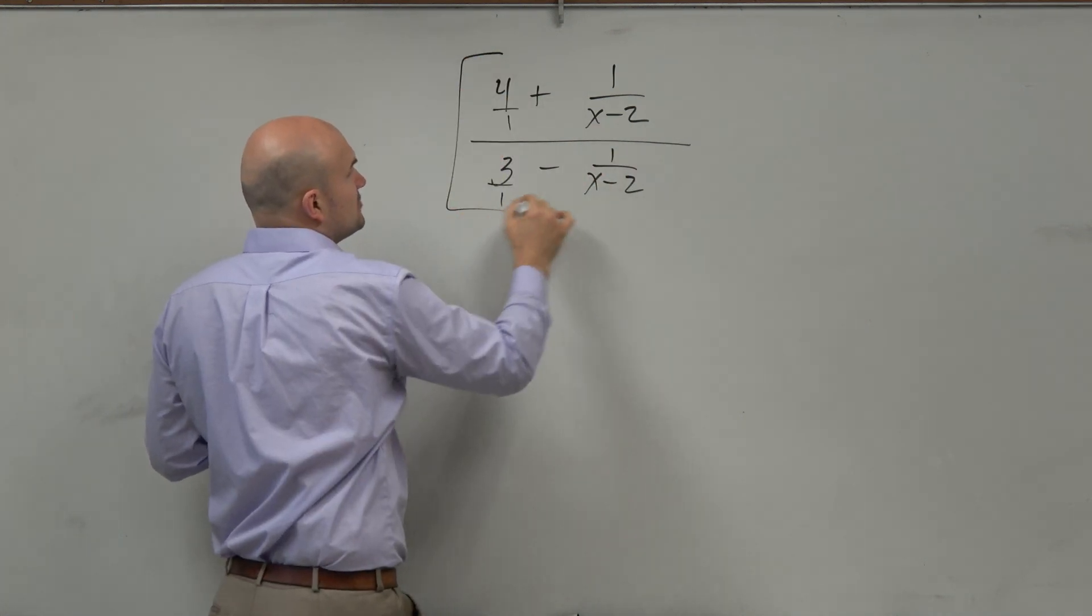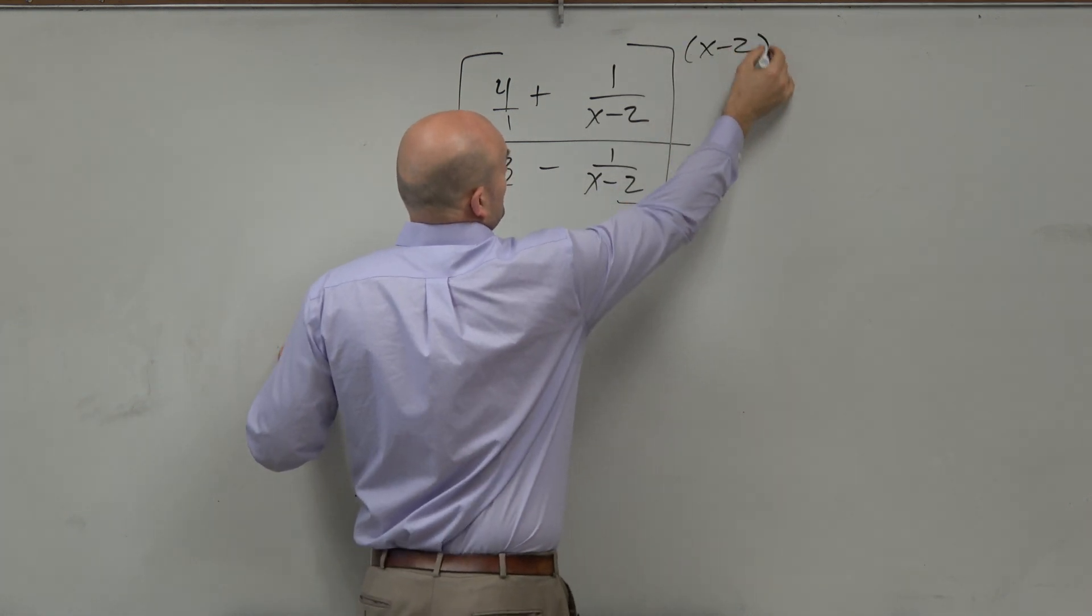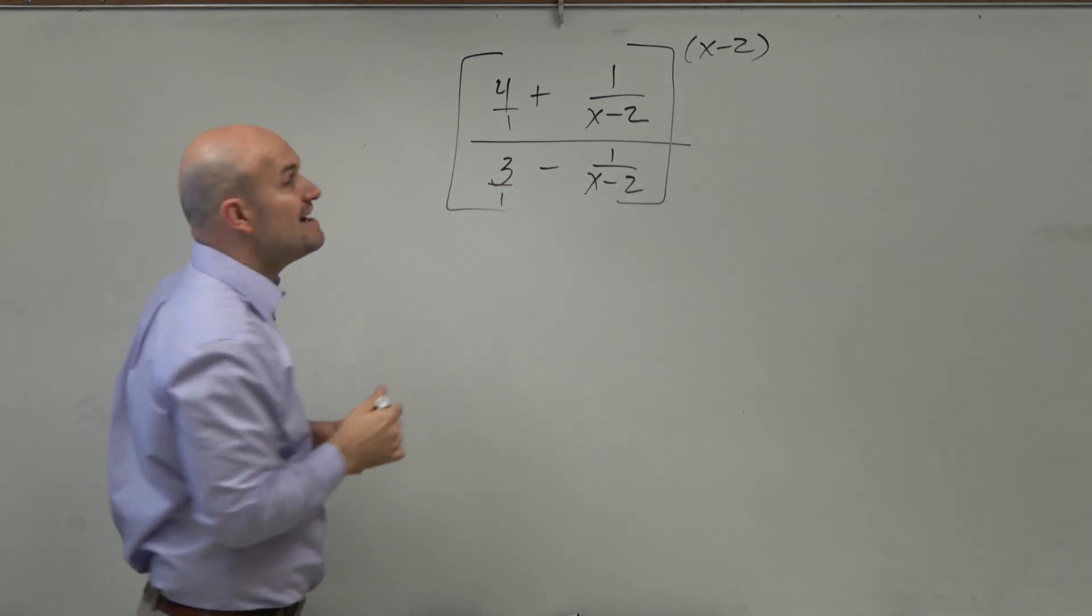So what we're going to do is I'm going to multiply everything times x minus 2. Everything.